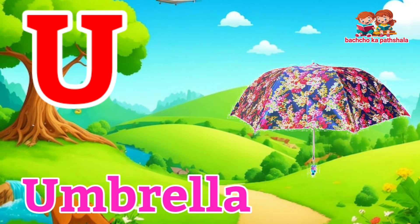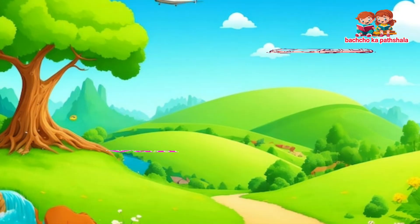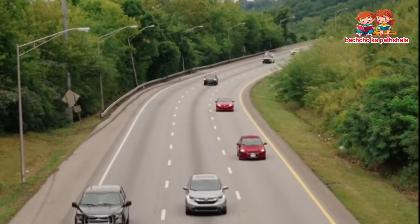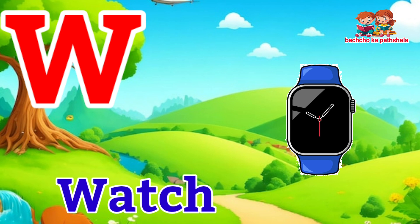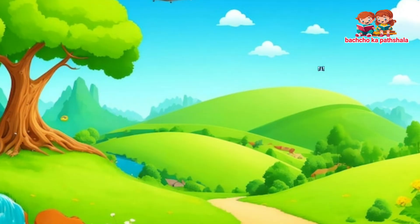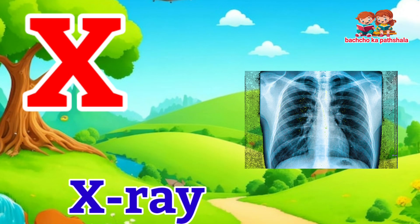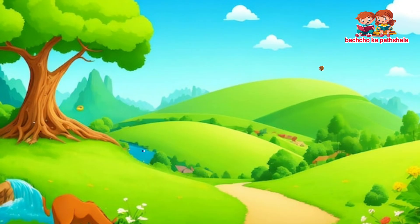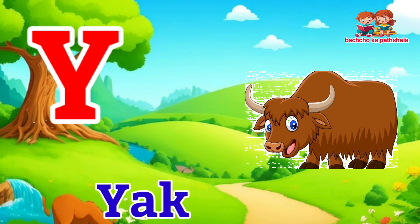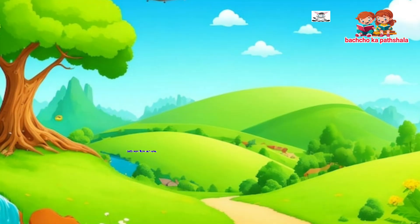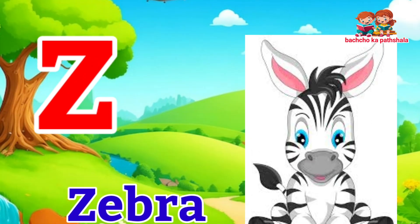U for umbrella. V for van. W for watch. X for xray. Y for yak. Z for zebra.